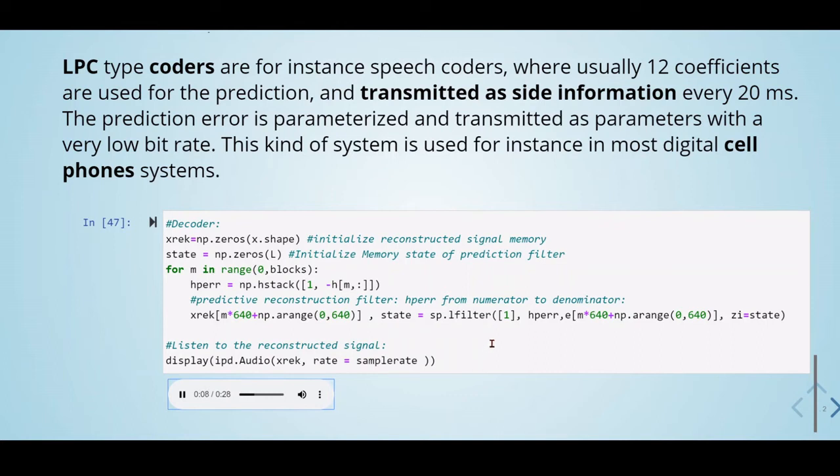LPC type coders are, for instance, speech coders where usually 12 coefficients are used for the prediction and transmitted as side information every 20 milliseconds. The prediction error is parametrized and transmitted as parameters with a very low bit rate. This kind of system is used, for instance, in most digital cell phone systems.